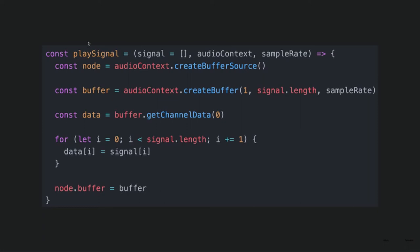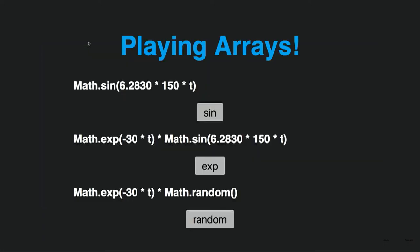You can basically manipulate — grab a sine wave at 150 hertz and make it sound. Annoying sound — another way to be annoying on the web. And then you can multiply this same sine wave by a decreasing exponential, or by a random value, and you can play drums if you want.